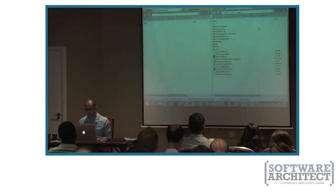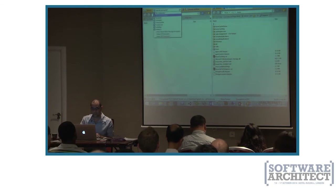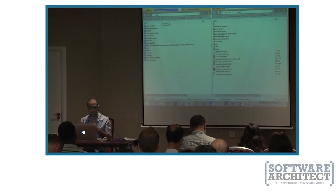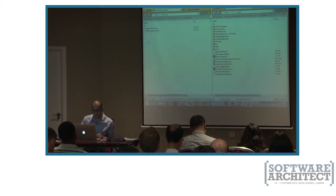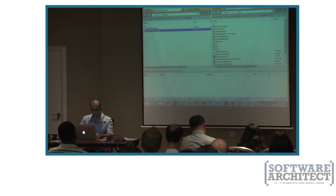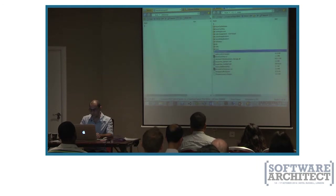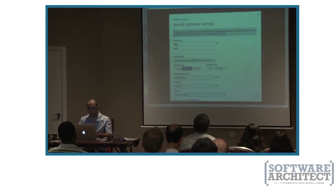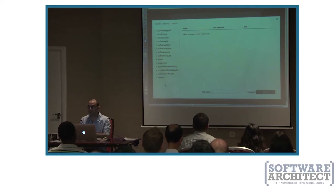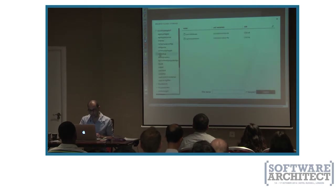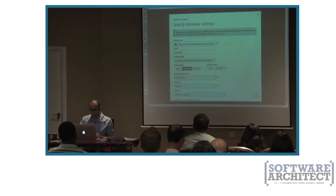I have this nice utility called CloudBerry Explorer — I'm not advertising them, it's just a cool utility. I'm using it to connect to my Blob Storage on the left and my local hard drive on the right. I'll go to Blob Storage, find the DB Backup container, and copy these two BACPAC files there. They're small, so it doesn't take long.